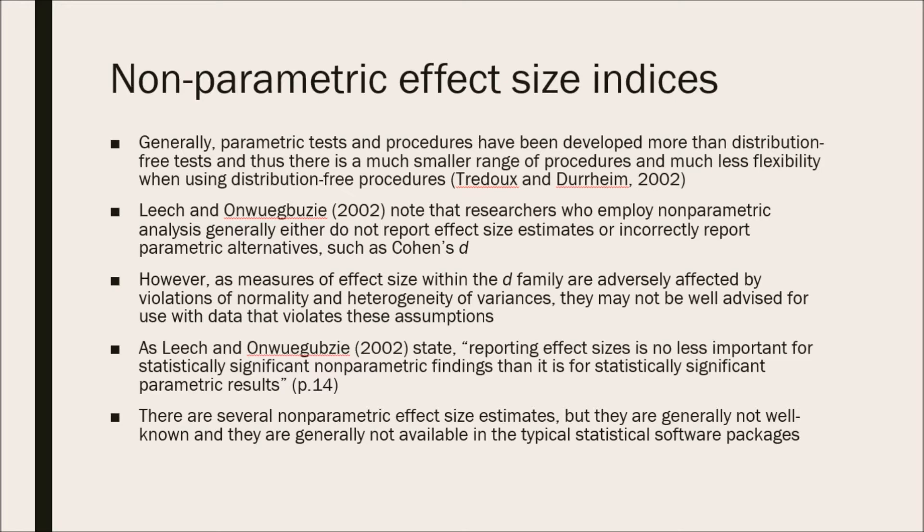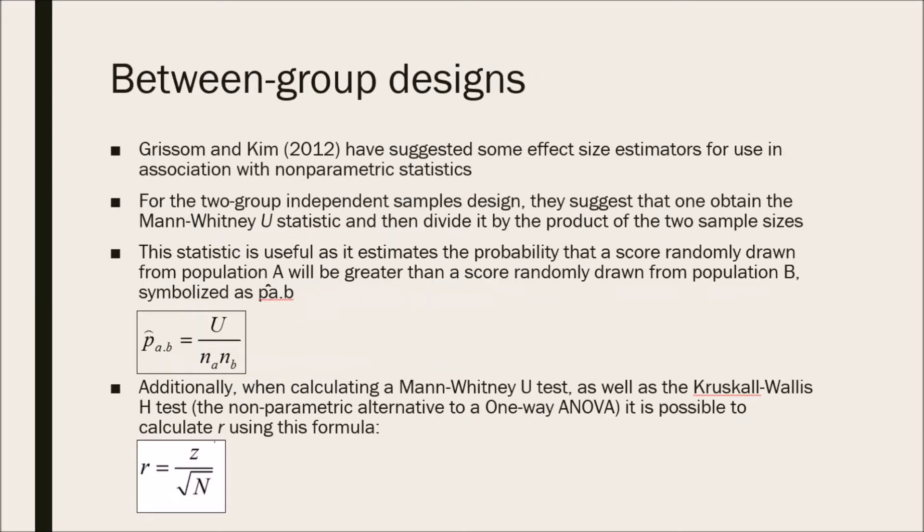Starting with between-group designs, Grissom and Kim have suggested some effect size estimators for use in association with non-parametric statistics. For the two-group independent samples design, they suggest that one obtain the Mann-Whitney U statistic and then divide it by the product, which is the multiplication of the two sample sizes.